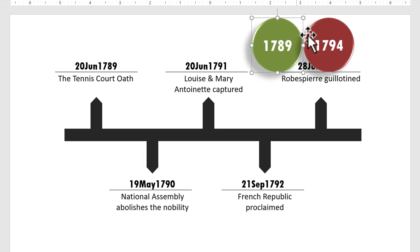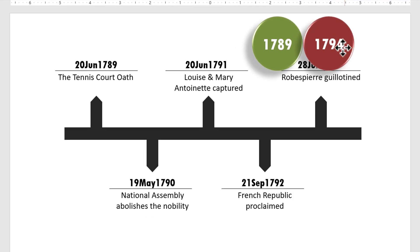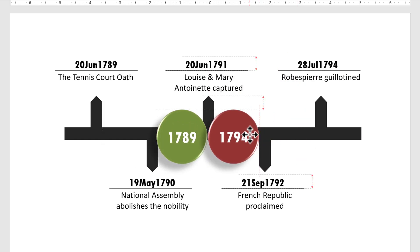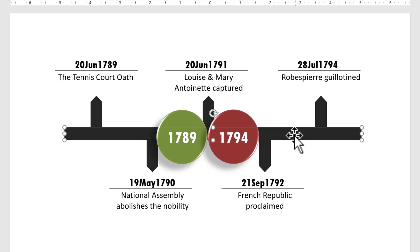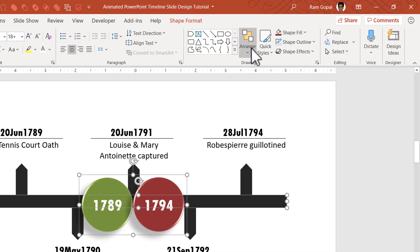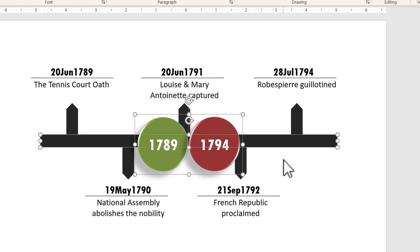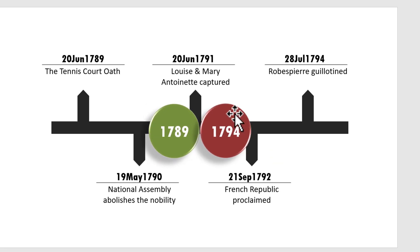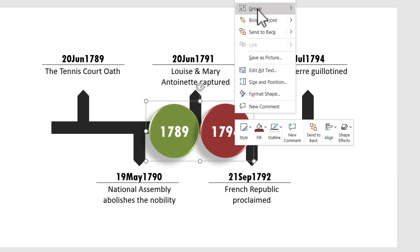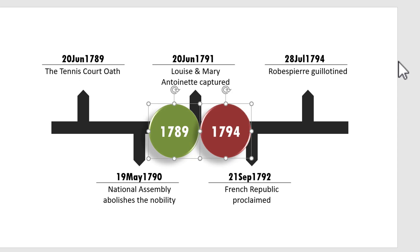Now let us select both buttons, press Ctrl G to group them, and bring them along the bar. Just to ensure that these two buttons are exactly in the center of the bar, I'm going to select the bar first and then this group, then go to arrange, align and say align center. Now I know it is exactly in the center. I can deselect by clicking outside, then right-click on this group, go to group and say ungroup. Now we can add our animations.